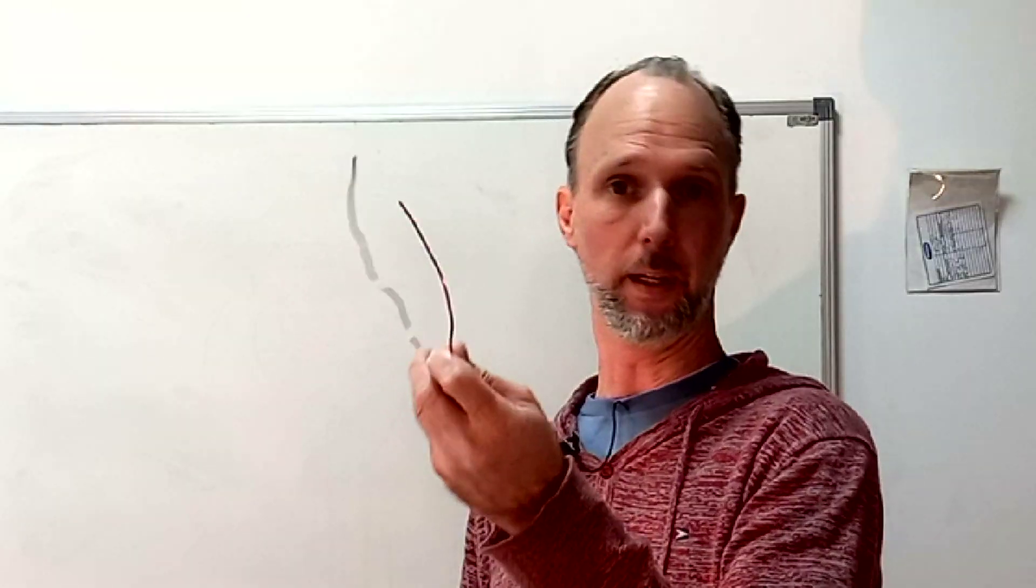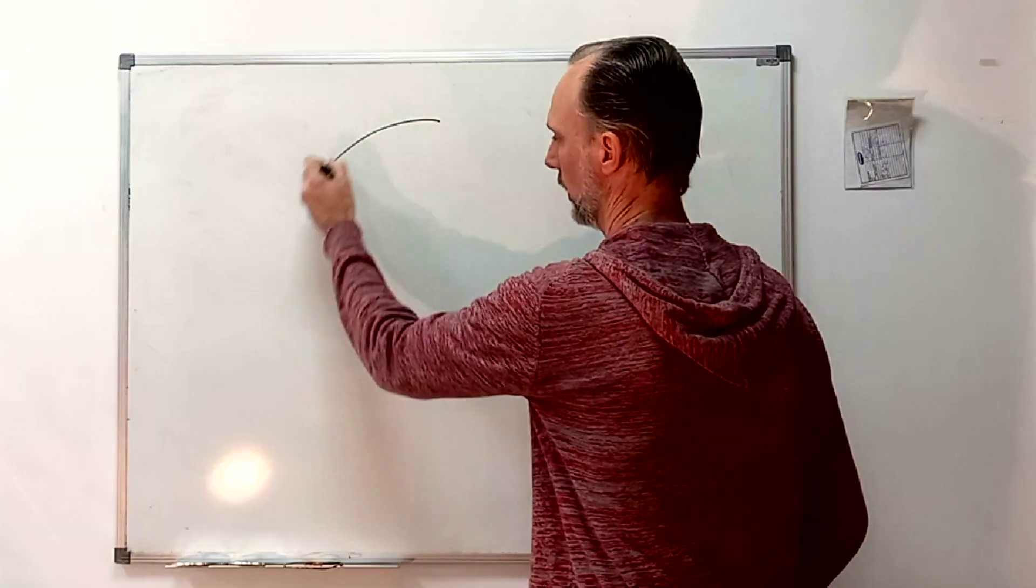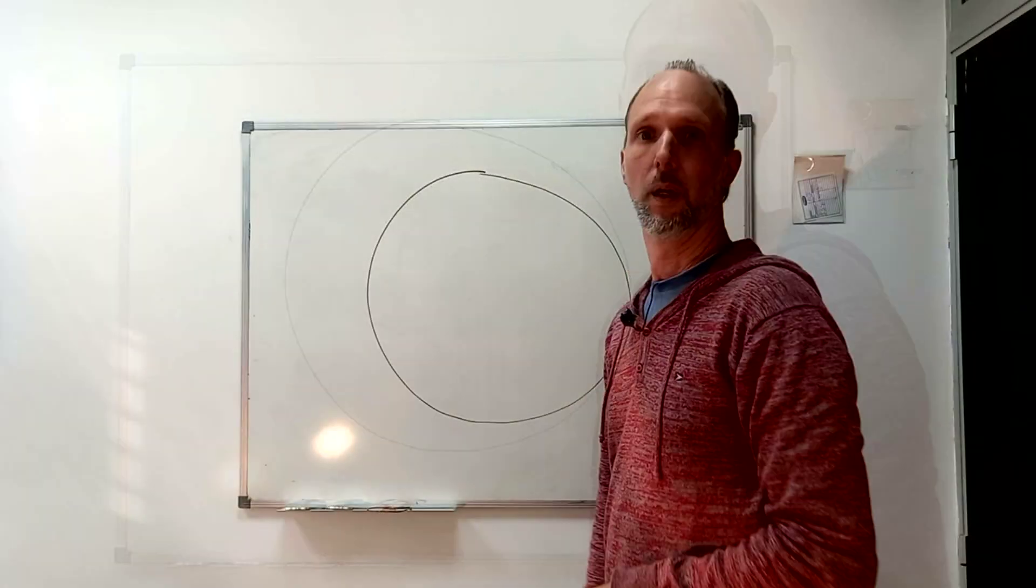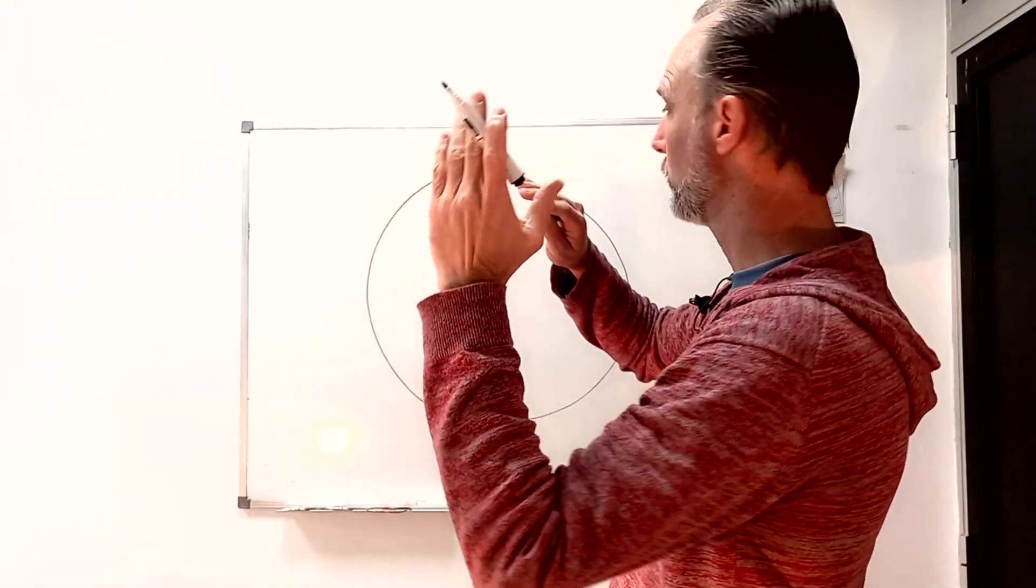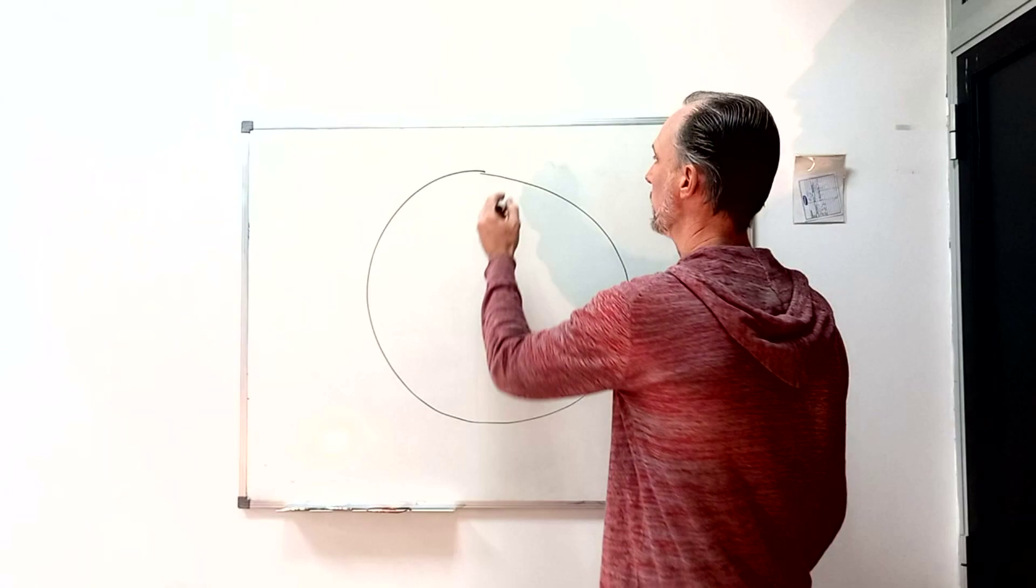So if we take a piece of wire like this one and make a loop, if we apply a magnetic field say towards the direction of the board, the Faraday induction law tells us that